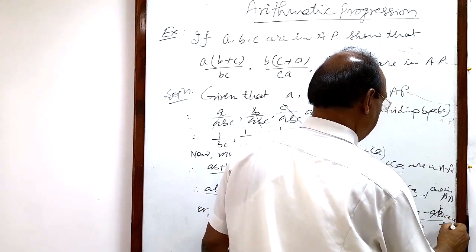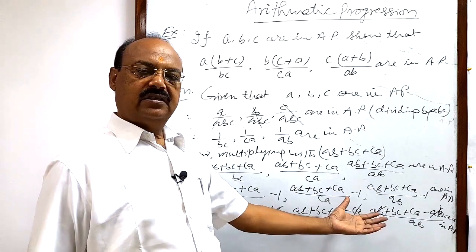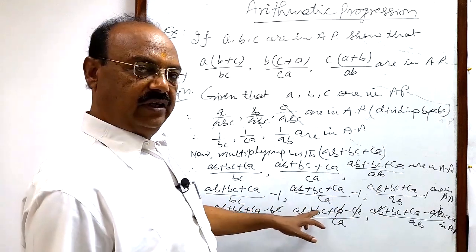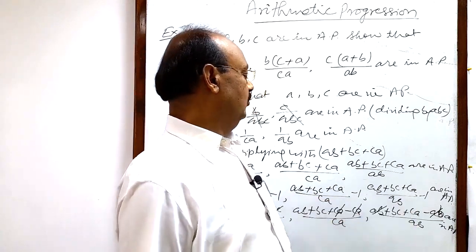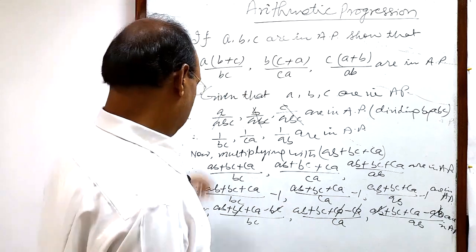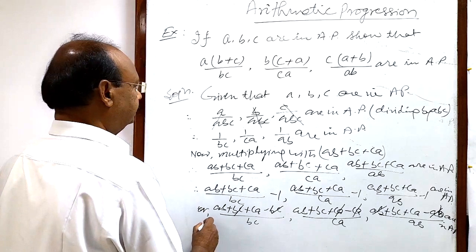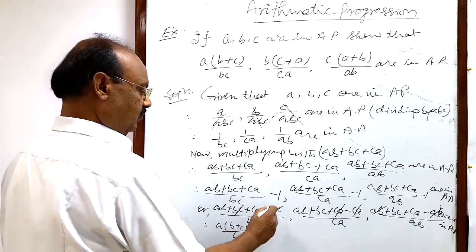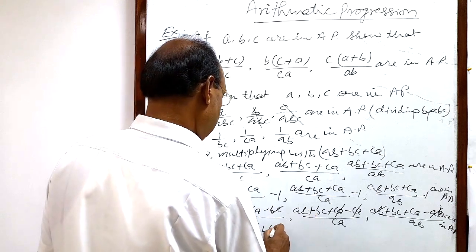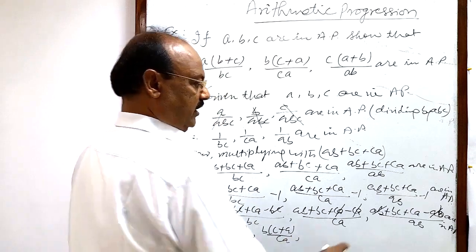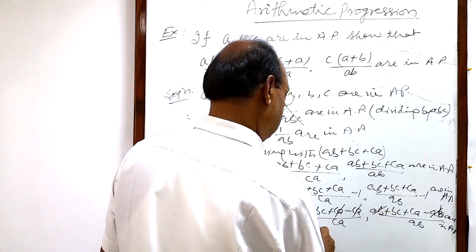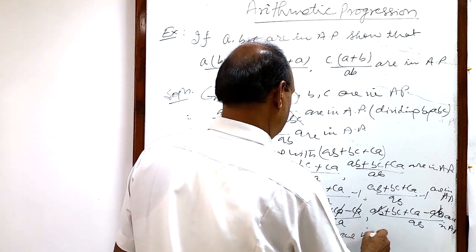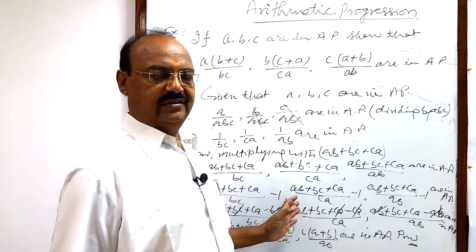So these are also in A.P. Now we are getting the result here. Simply taking A common from the first numerator, taking B common from the second numerator, and taking C common from the third numerator. Therefore we get: A(B + C) upon BC, B(C + A) upon CA, and C(A + B) upon AB — are in A.P. So proved, we got the result here. Okay? Understood?